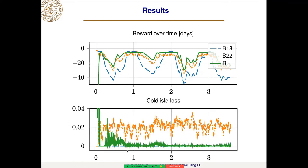The cold aisle loss measures how much the server inlets are above 27 degrees. The orange policy doesn't manage this very well, while the reinforcement learning agent doesn't do perfectly either but does a lot better. The blue 18-degree baseline policy stays under the threshold and has no inlets above 27 degrees.